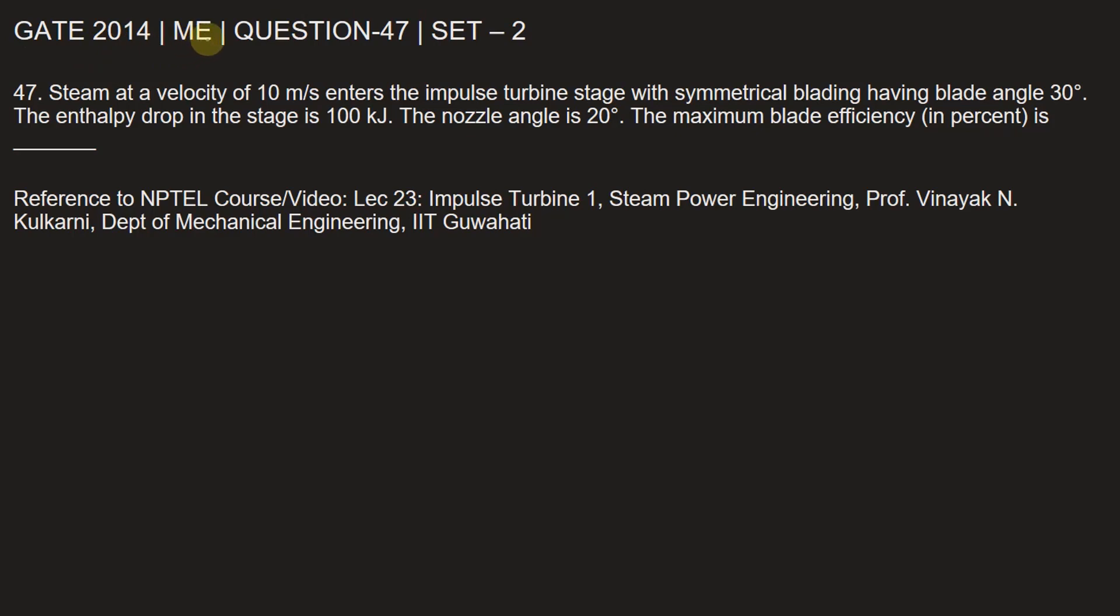This question is from Gate Mechanical Engineering of 2014, question number 47 of set 2. The question is: steam at a velocity of 10 meters per second enters the impulse turbine stage with symmetrical blading having blade angle 30 degrees. The enthalpy drop in the stage is 100 kilojoules. The nozzle angle is 20 degrees. Find the maximum blade efficiency in percent.